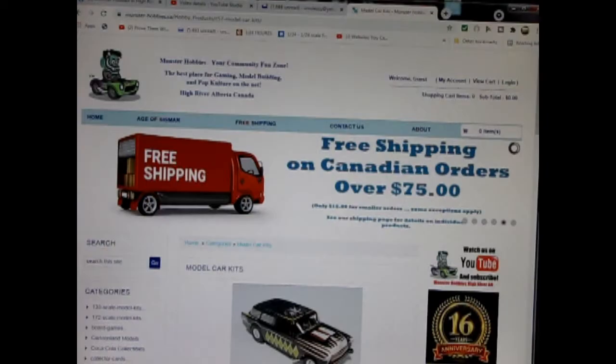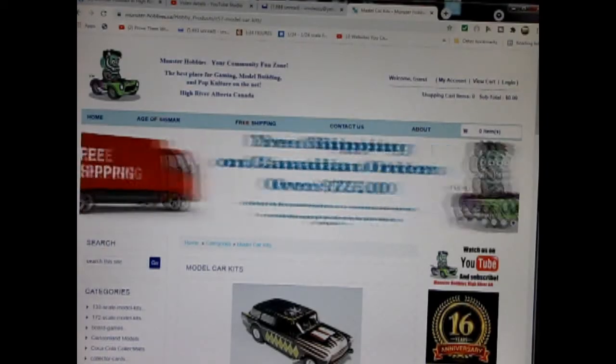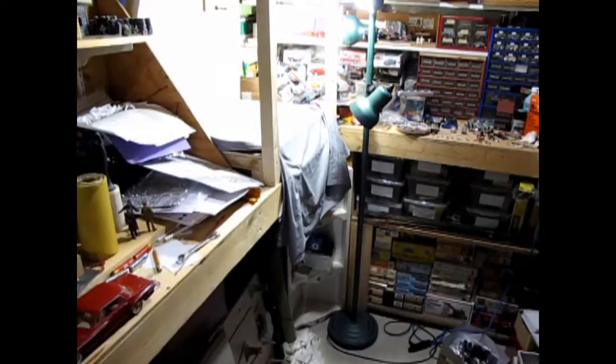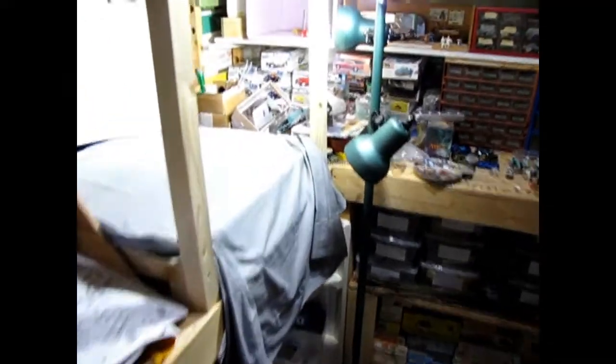Are you looking for a great gift idea for somebody on your shopping list? Today we will be looking at AMT Ertl's Mark Donohue's 1975 American Motors Matador. This model car kit is out of my own personal collection. However, you can see all of our available model kits at www.monster-hobbies.ca. I will leave a link in the description below. Now let's go down to our bench and see what's in the box.